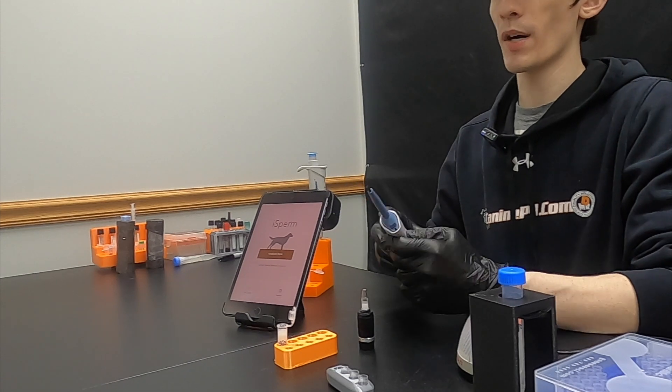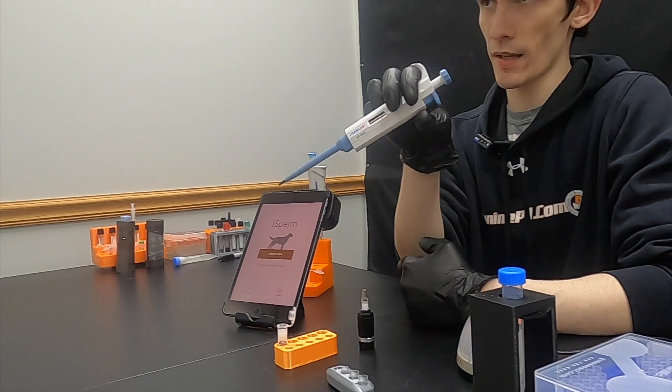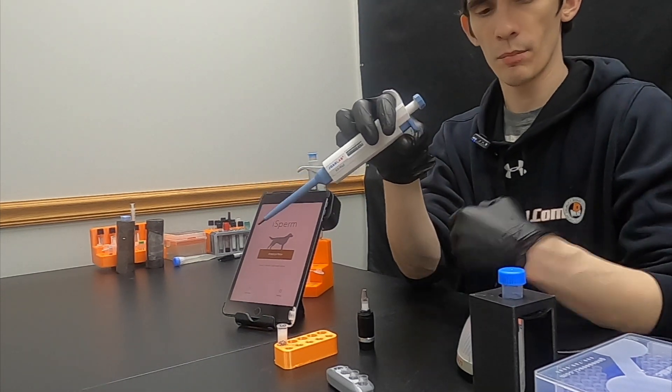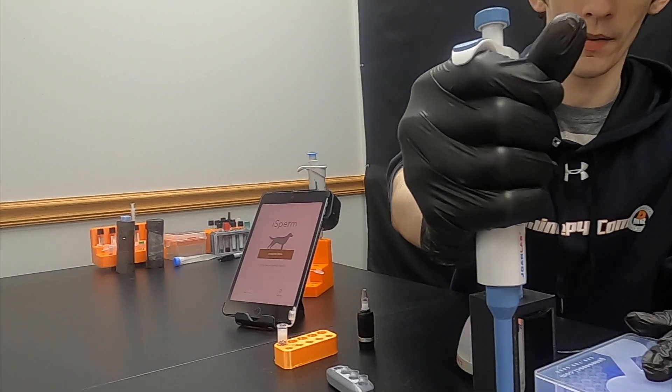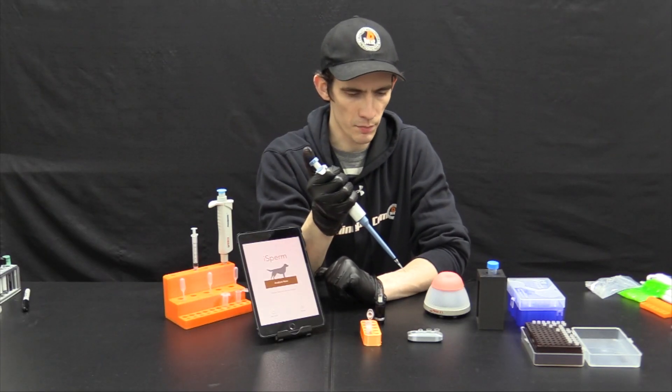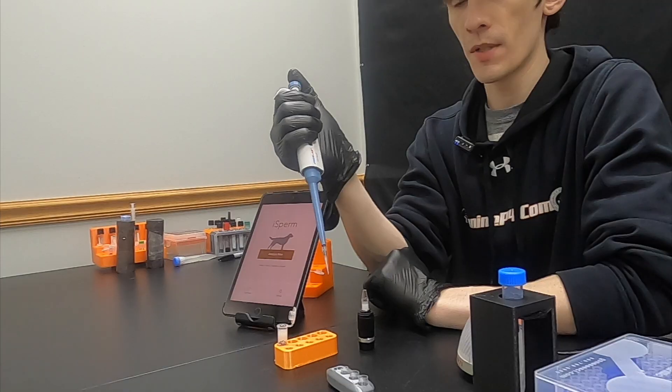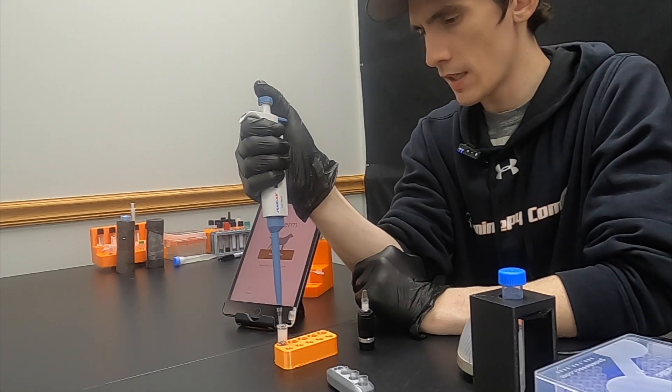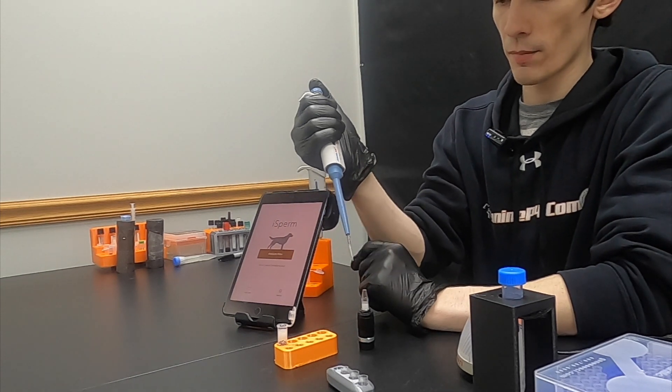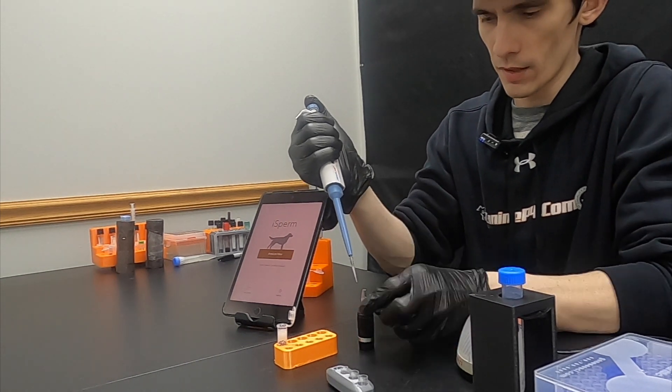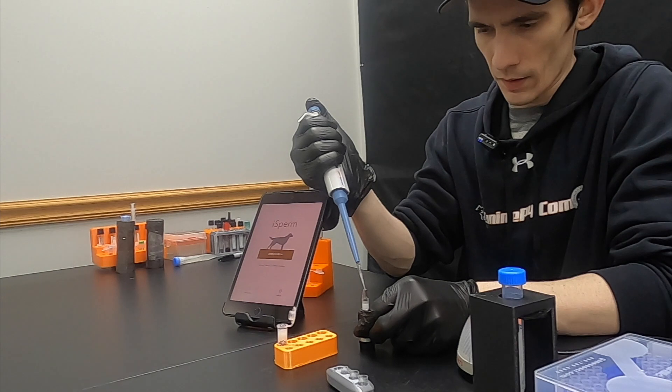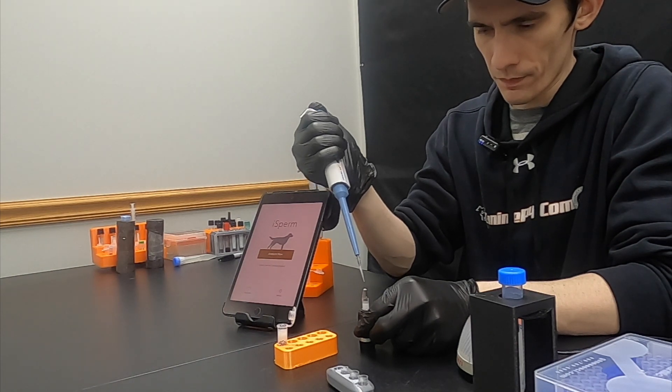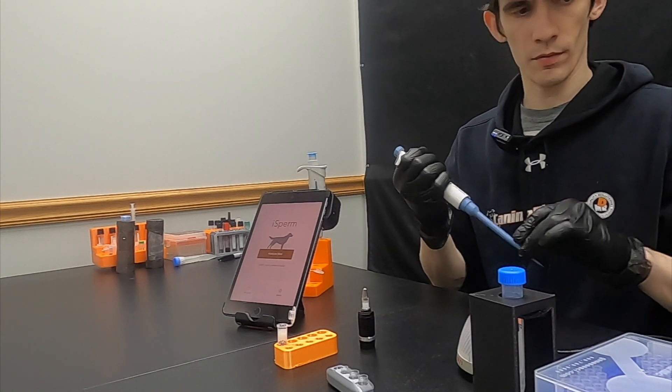Next we're going to use the pipette method. This requires the 7.5 microliter pipette volume of semen. This is what we're going to recommend here at K9P4. Again, there are three total methods of sampling outlined in the Aidmix iSperm manual. We find this one to be the easiest and most accurate so that's what we will demonstrate today. So we'll dispense that sperm sample right onto the base chip.